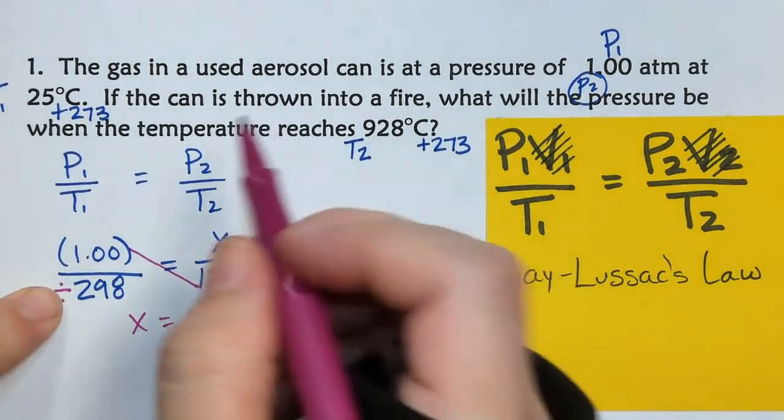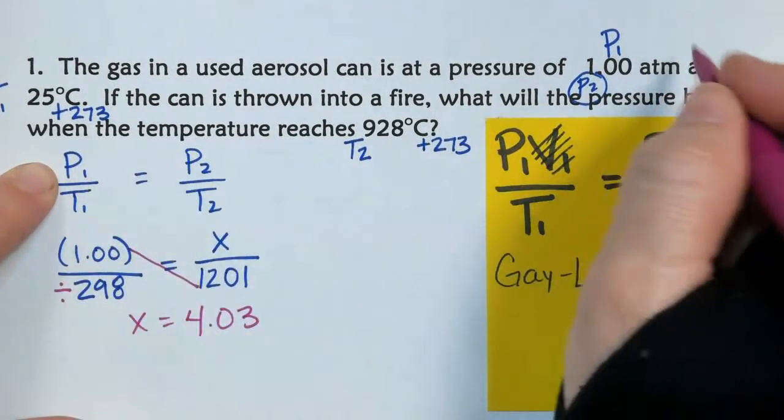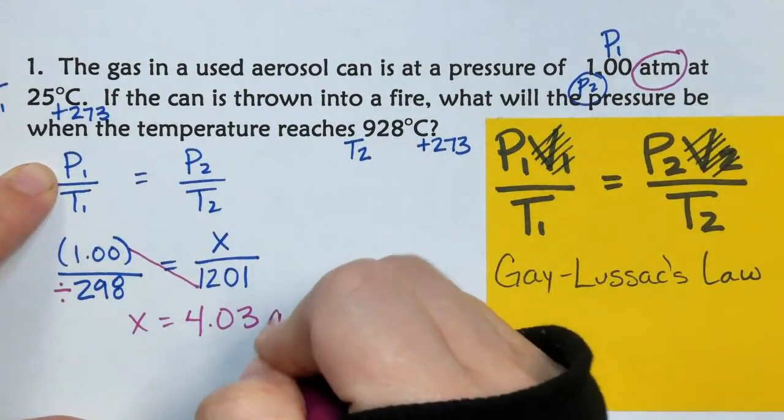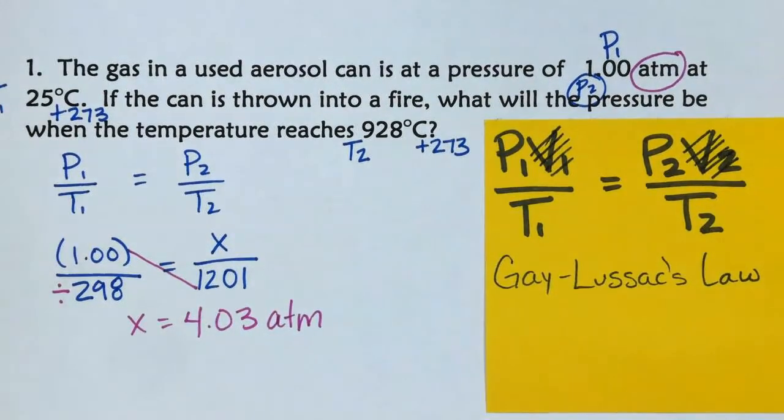And so X equals 4.03. Remember, whatever P1 is, that's what my P2 is. P1 was atmospheres, so my P2 is also in atmospheres.